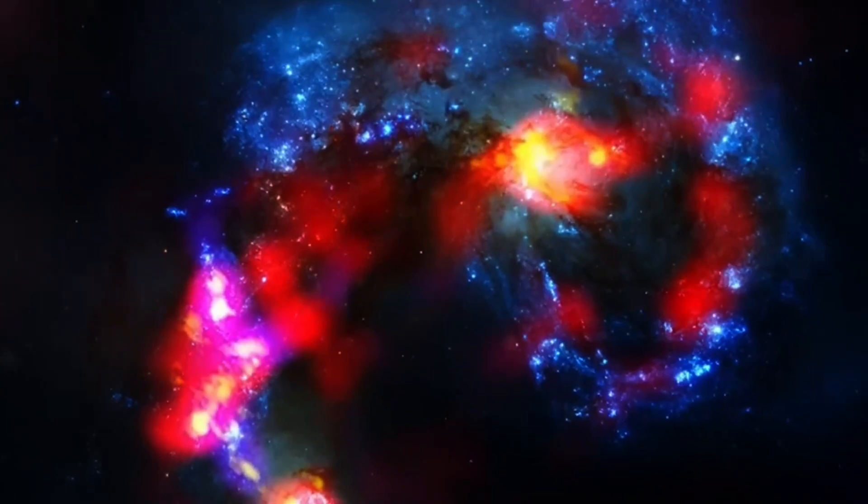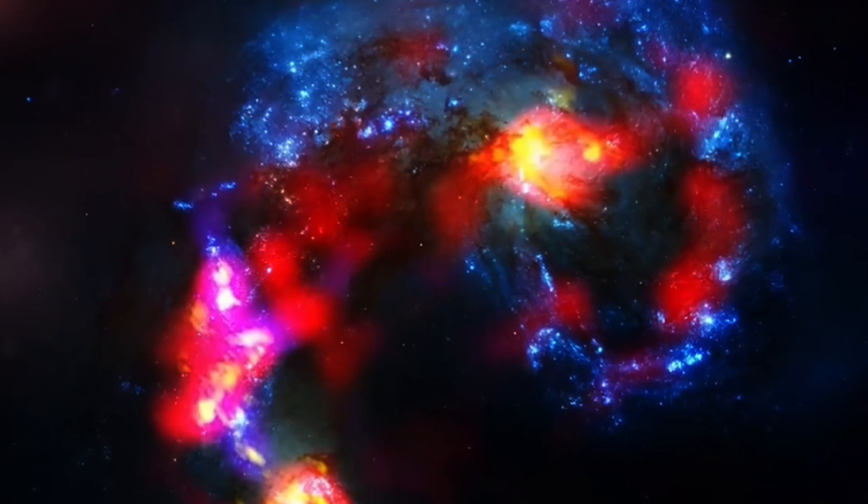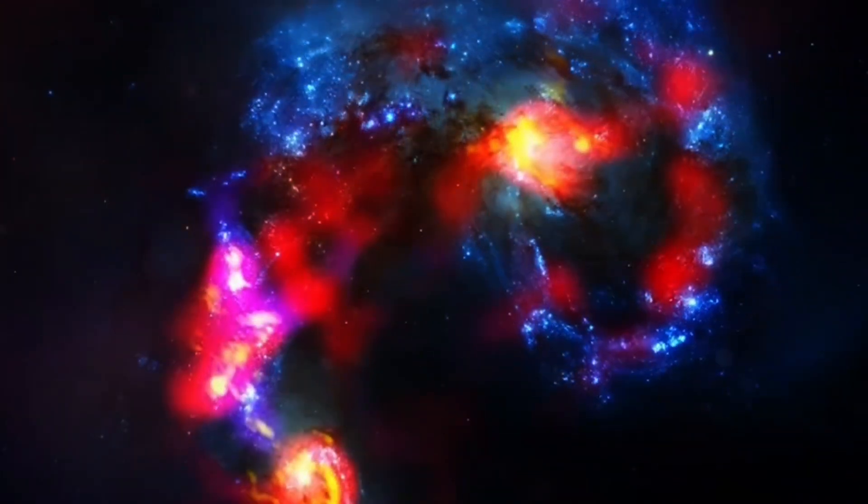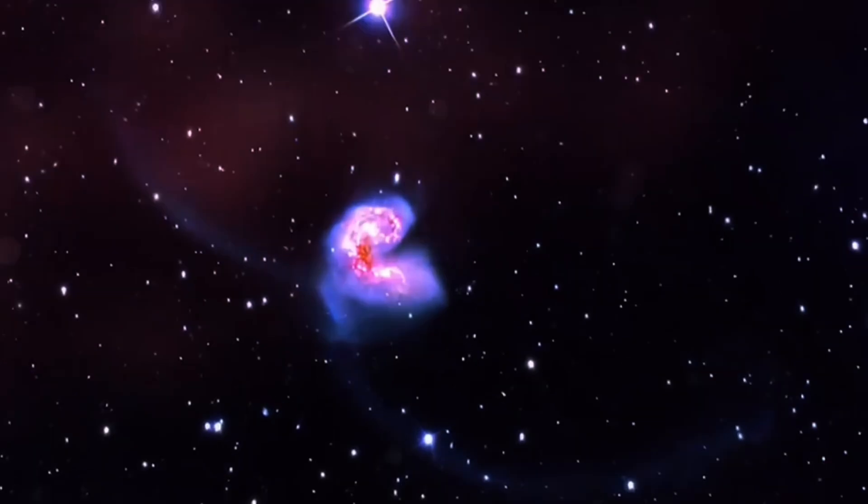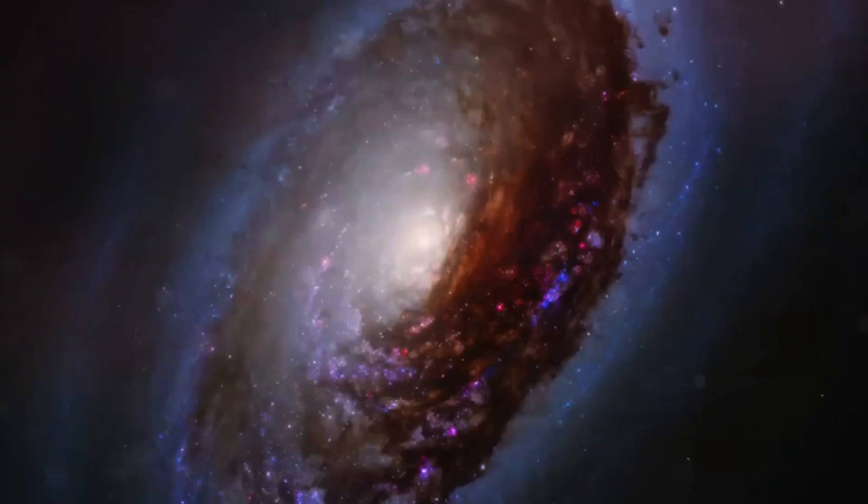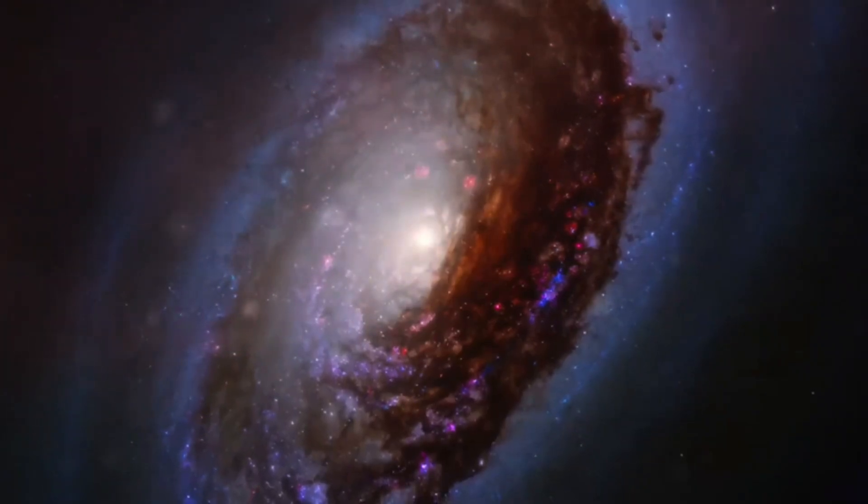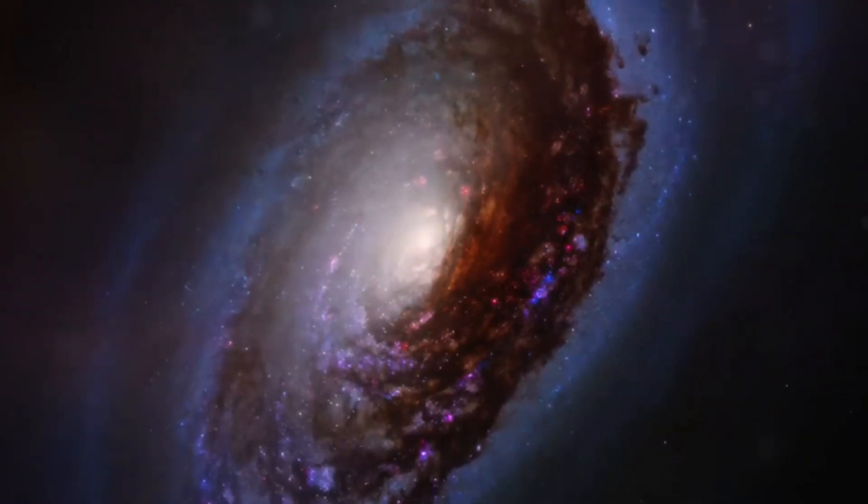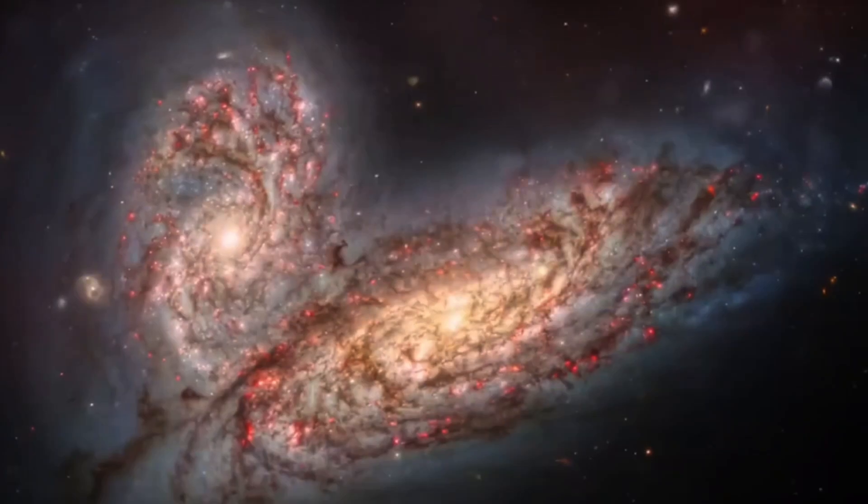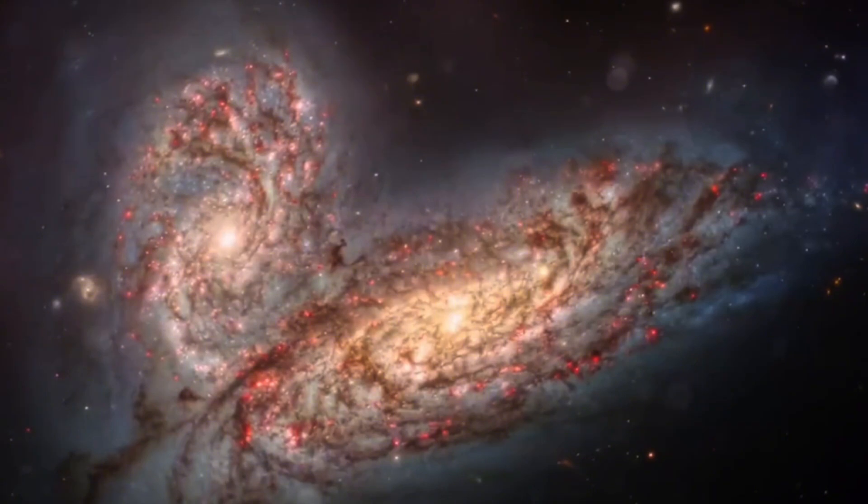These galaxies appear as they did when the 13.8 billion-year-old cosmos was between 400 million and 600 million years old. Captured in the midst of their formation, the JWST imaged these galaxies consuming surrounding hydrogen and helium to fuel the creation of new stars and promote their growth. Although currently shapeless and disorganized, being observed less than a billion years after the Big Bang, these galaxies are expected to evolve into more familiar structures, such as the spiral shape of the Milky Way.